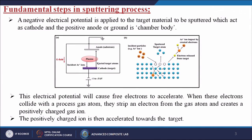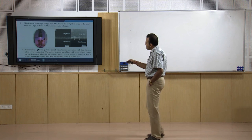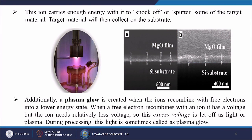The electrical potential causes free electrons to accelerate. When these electrons collide with a process gas atom, they strip an electron from the gas atom and create a positively charged gas ion. The positively charged ion is then accelerated towards the target. The ion carries enough energy to knock off or sputter some of the target material, which then collects on the substrate. Additionally, a plasma glow is created when the ions recombine with free electrons into a lower energy state.